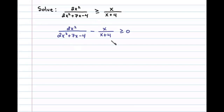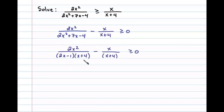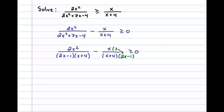Next we need to simplify the left side to a single algebraic fraction. Let's begin by factoring this denominator. We can see that the LCD — the common denominator — is going to be 2x minus 1 times x plus 4. So we'll multiply the numerator and denominator of the second algebraic fraction by 2x minus 1.